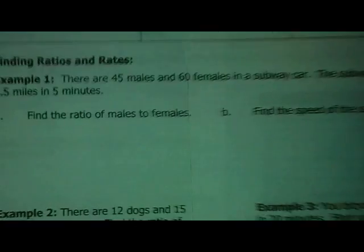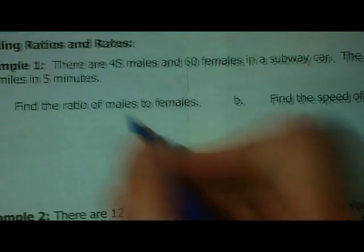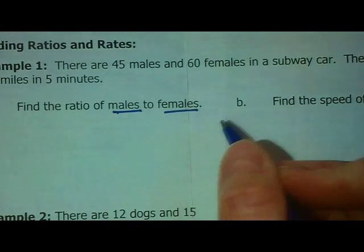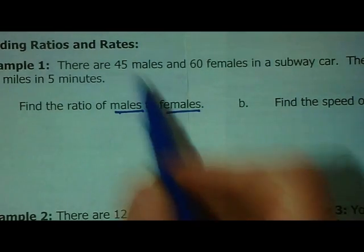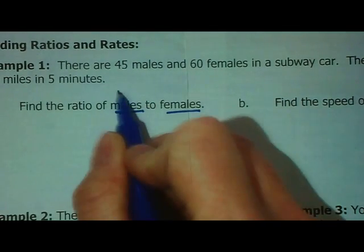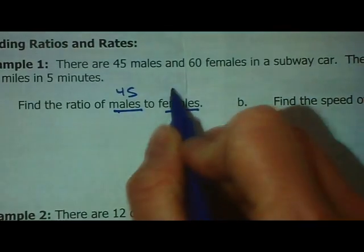Alright. Your first task is to find the ratio of males to females. So, males, females. Order is really important. And usually it's ladies first, but in this situation it's not. It says males to females. So, we need to look at the number of males. The number of males is 45. And the number of females is 60.